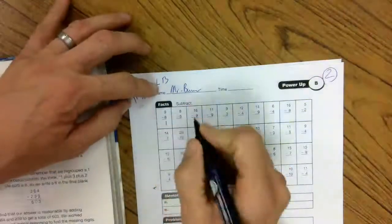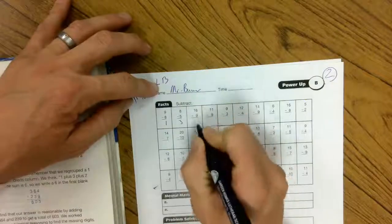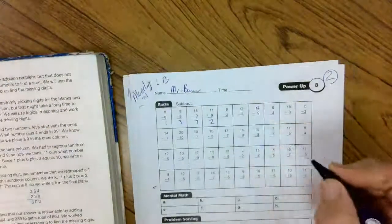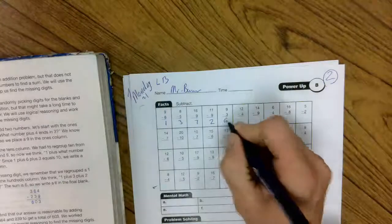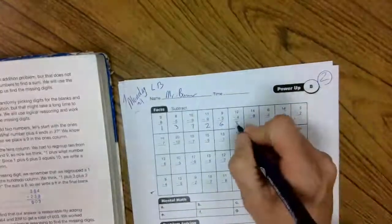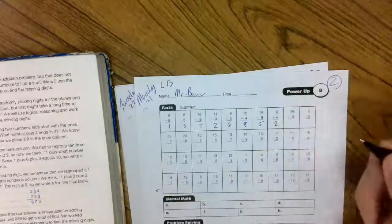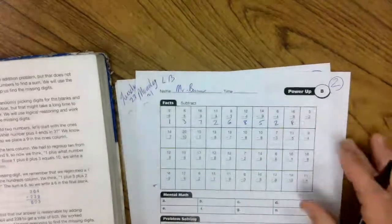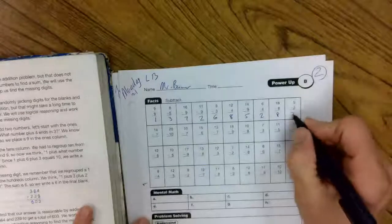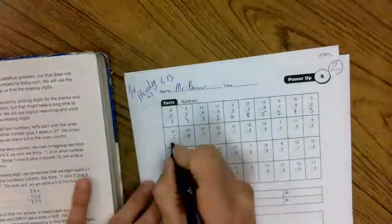9 minus 8 is 1. 8 minus 5 is 3. 16 minus 9 is 7. 11 minus 9 is 2. 9 minus 3 is 6. 12 minus 4 is 8. 14 minus 9 is 5. 6 minus 4 is 2. 16 minus 8 is 8. 5 minus 2 is 3.